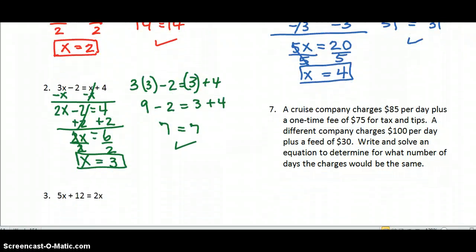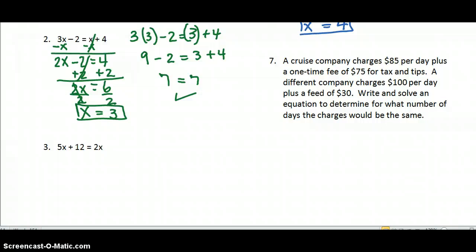And here's an example of how you would use two variables on both sides of an equation in a word problem. A cruise company charges $85 per day plus a one-time fee of $75 for tax and tips. Now there's a different company that charges $100 per day plus a fee of $30. Write and solve an equation to determine for what number of days the charges would be the same. The charges would be what? The same. The same is the same thing as saying they would be equal. So we have two different cruise companies. They're each charging a per day fee, so we'll let D stand for the number of days.